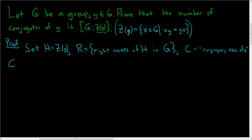We can now restate our claim. The number of conjugates of g in G — that is, the order of the conjugacy class — is equal to the index of the centralizer of g in G, which is the number of right cosets of H in G. So that's the cardinality of R. We have to show that the cardinality of C equals the cardinality of R. So let's create a bijection.